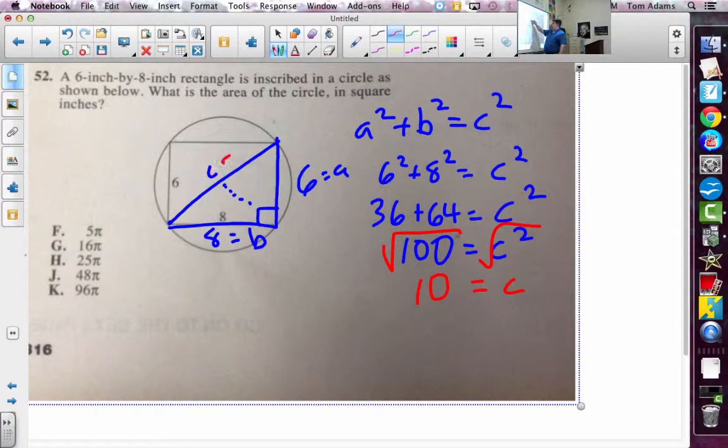So c equals 10, but really that's the diameter of the circle. You guys with me so far? So now it says, what is the area of the circle? Area, that formula calls for radius.